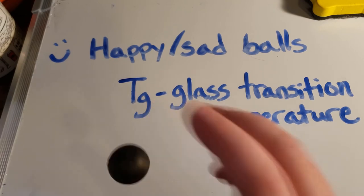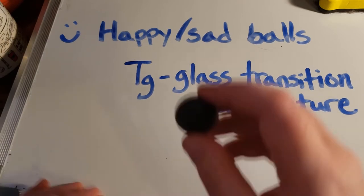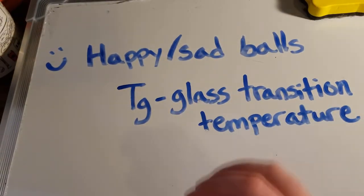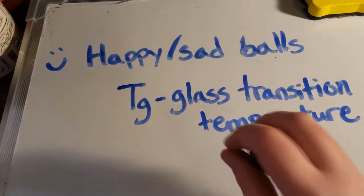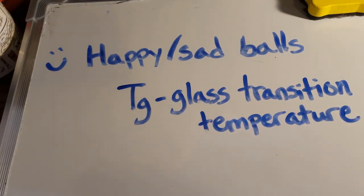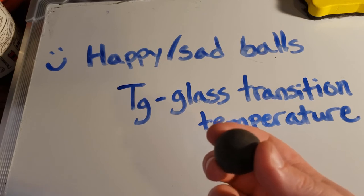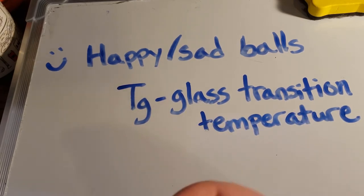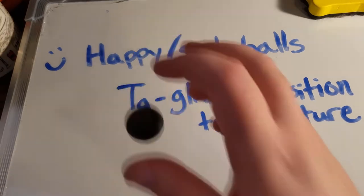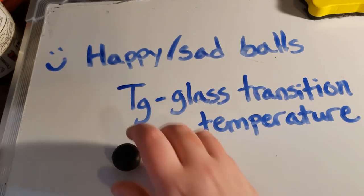The happy ball has a TG that is just below room temperature. So at room temperature I'm above the TG, giving me a rubbery, bouncy ball. The sad ball has a TG that is above room temperature, so at room temperature I am below TG — it's more of a glass — and it falls flat like this.